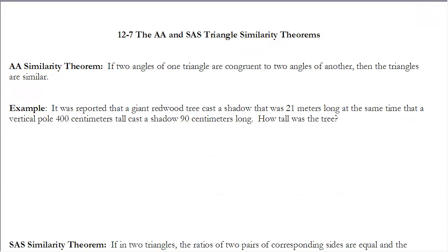These are the notes for section 12-7, the AA and SAS Triangle Similarity Theorems. Please stop the video and read the sections before continuing. In 12-6 we established that SSS, or side-side-side, was a triangle similarity theorem — if the ratio between all three corresponding sides were the same, then the triangles had to be similar to each other.